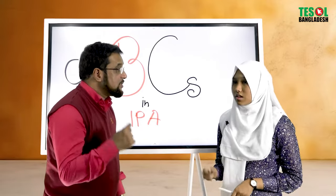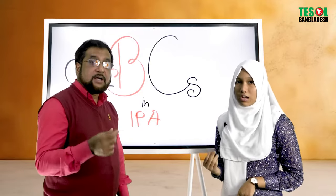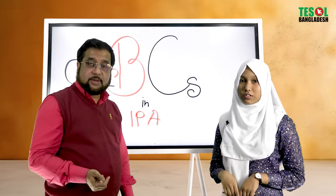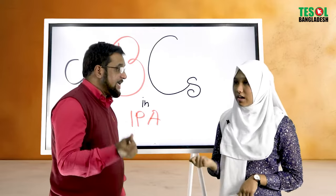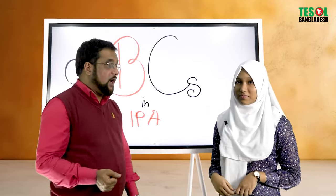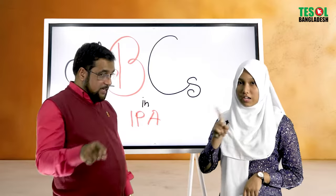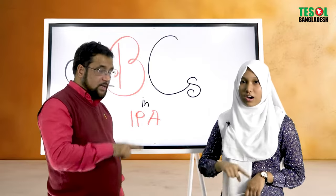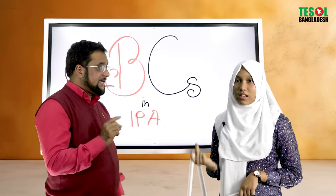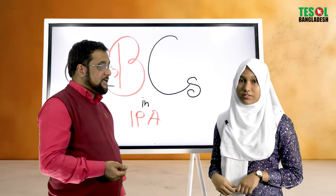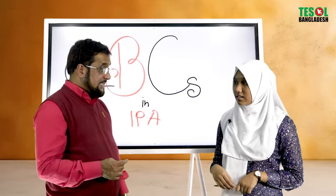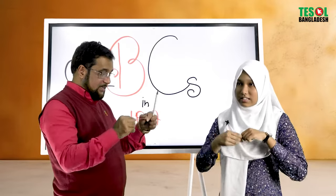How do you say W? D. A. B. L. Double. E. U. W. How do you say X? X. Exactly. Mashallah, very good. How about Y? Y. Y. Z. Z. A. Z. Z. Z. Z. Z E.